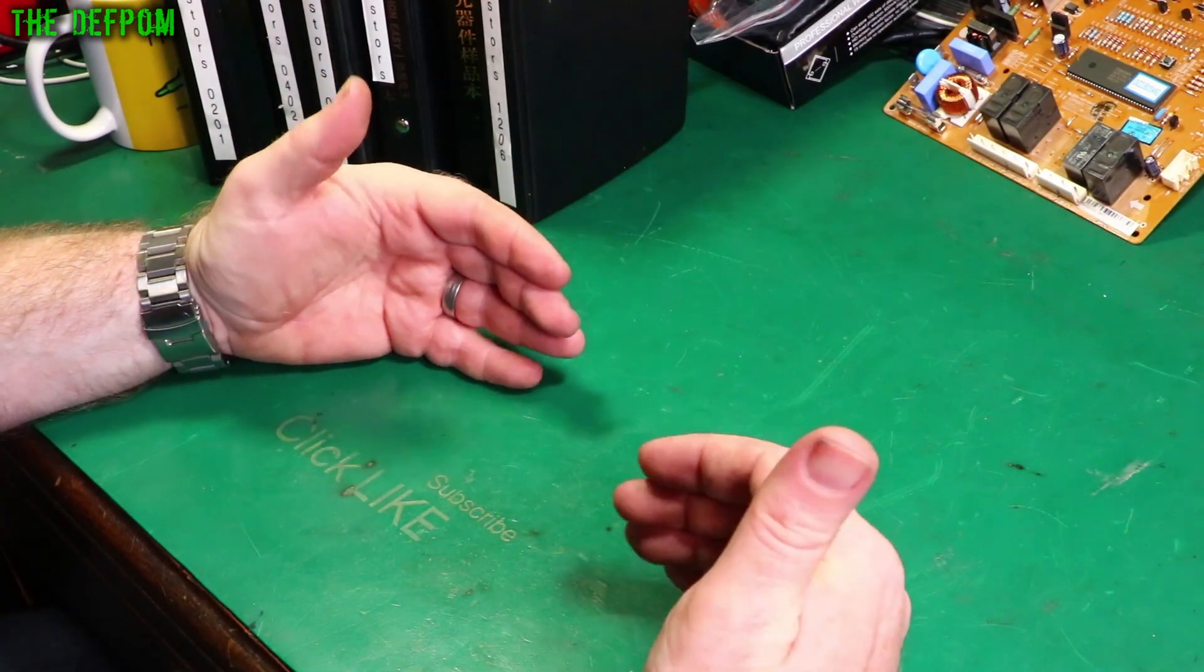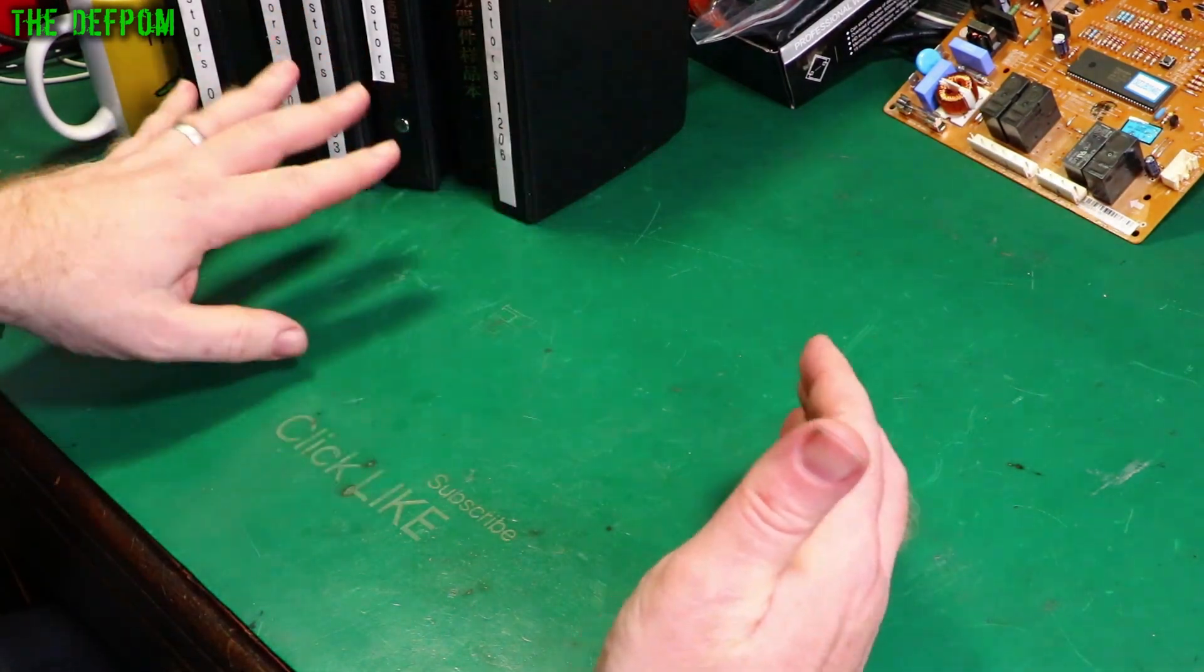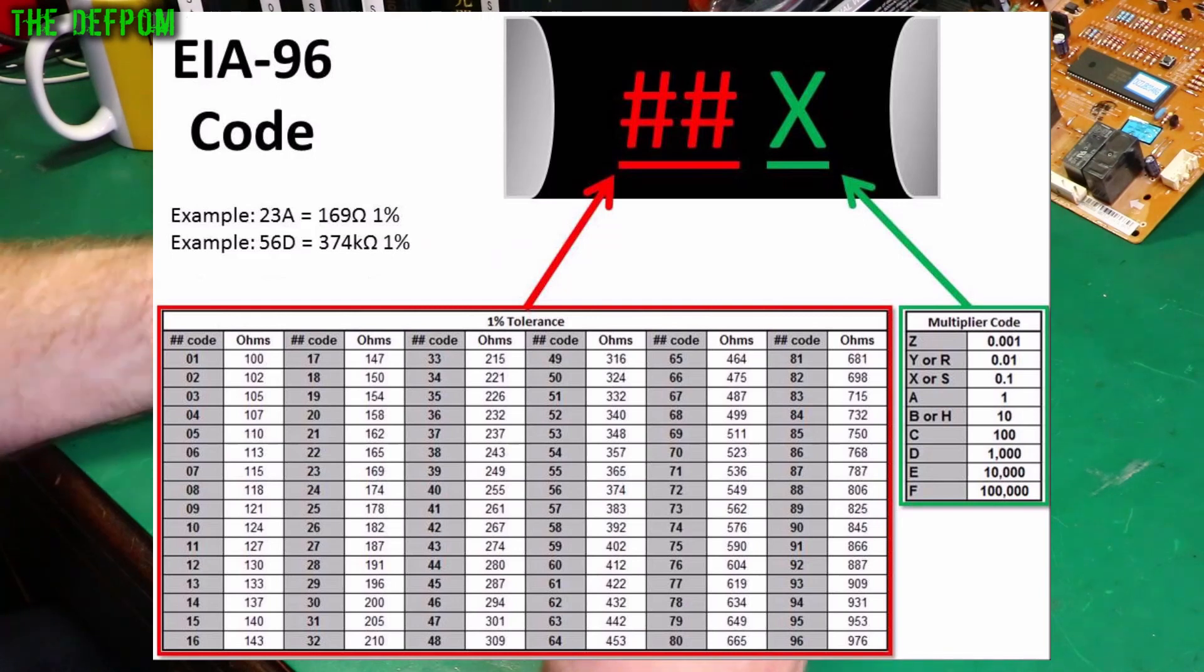There's also different ways of reading resistors depending on what the resistor is. Surface mount resistors have got a code printed on them which will tell you the resistance. There's different formats for that. Three letter codes, four letter codes and also 96 version code as well which is a bit different.